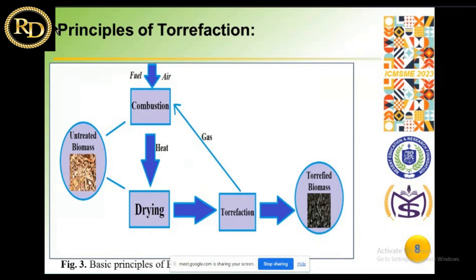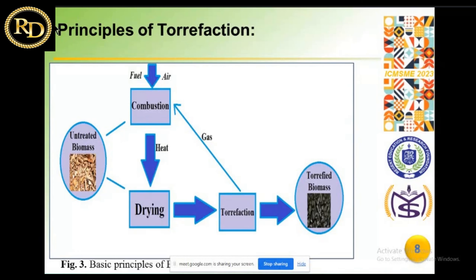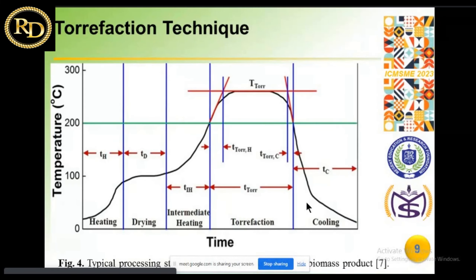This is the torrification principle as described earlier. With untreated biomass and a combustion technique, we add fuel or air depending on whether we are doing dry or wet torrification. In wet torrification, some water or liquid element is used. After drying, the torrification is carried out at 200 to 300 degrees centigrade with the addition of nitrogen or argon — a non-reactive gas — and finally the torrified product is obtained.